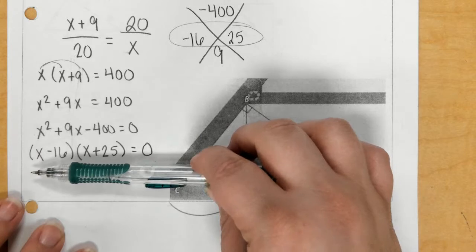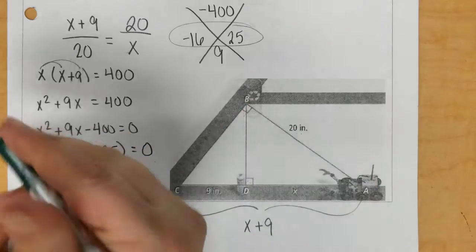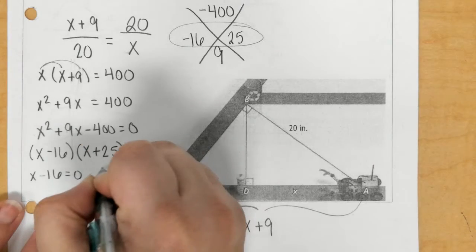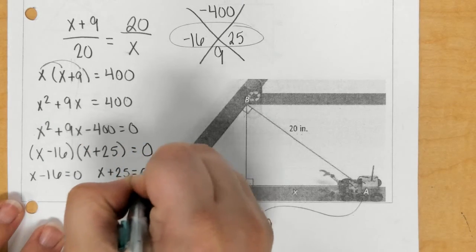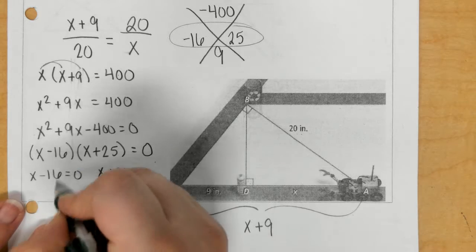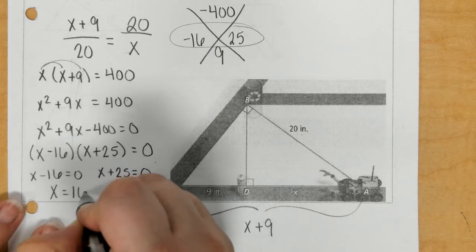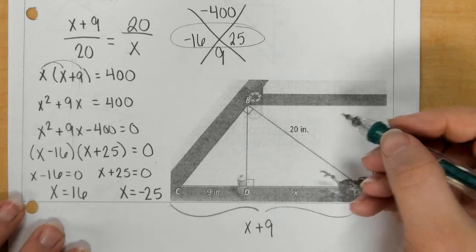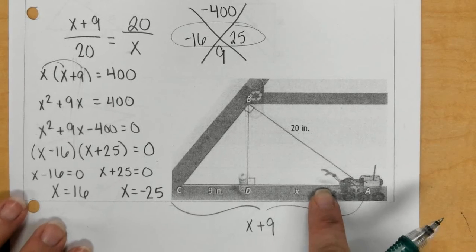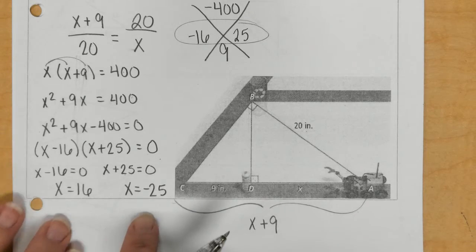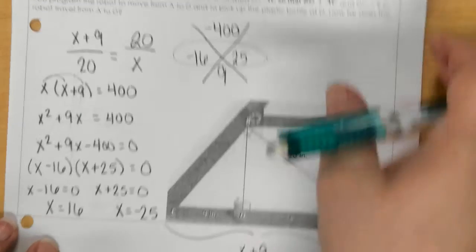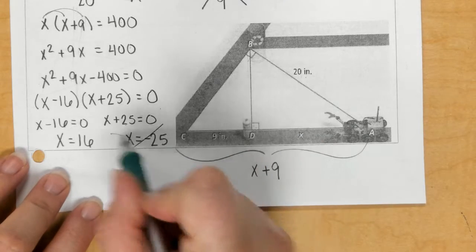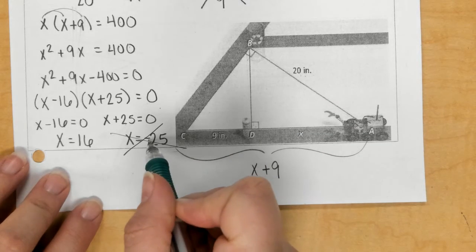And now, because it says equals 0, you have to solve this. So, I say X minus 16 equals 0. X plus 25 equals 0. So, here, X is 16. And here, X is negative 25. So, you only have one distance. So, there should only be one measurement. And we have two answers here. So, I have to decide what is my actual answer. And it cannot be this one because a distance is not negative.